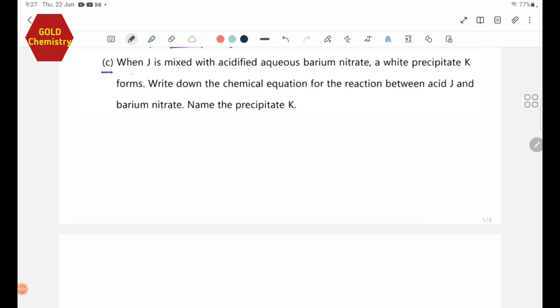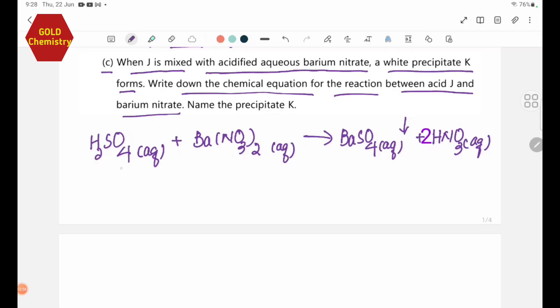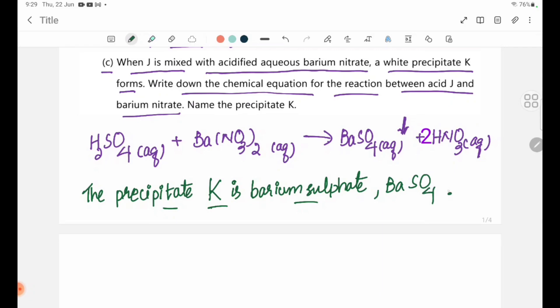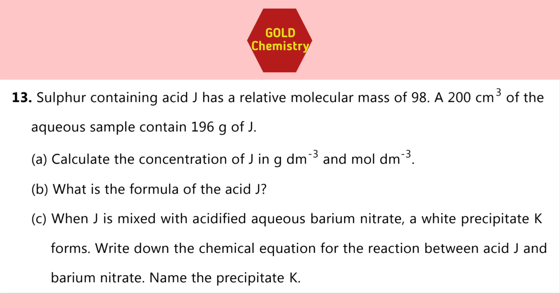When acid Z is mixed with acidified aqueous barium nitrate, a white precipitate K forms. Write down the chemical equation for the reaction between acid Z and barium nitrate. The equation is: H2SO4 plus Ba(NO3)2 gives BaSO4 plus 2HNO3. The precipitate is BaSO4.